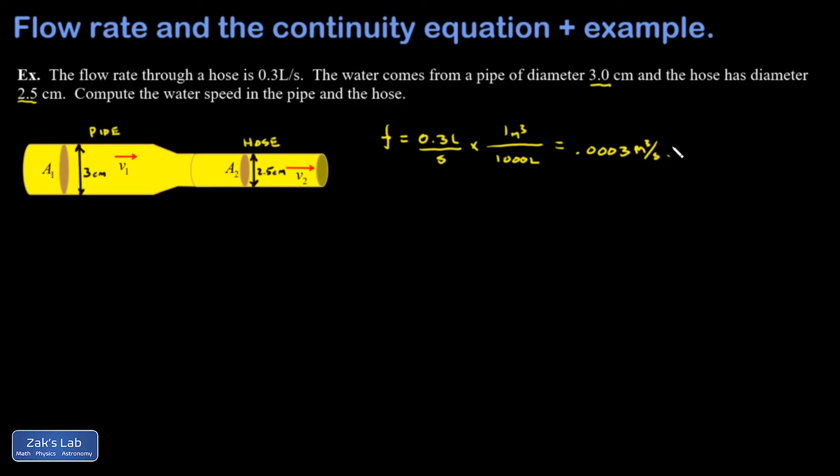Then I can relate that flow rate to the speed at either location in the pipe here using F equals AV. So V1 is just going to be the flow rate in the proper units divided by A1. So I get 0.0003 cubic meters per second, all divided by the cross-sectional area of the pipe at 0.1.